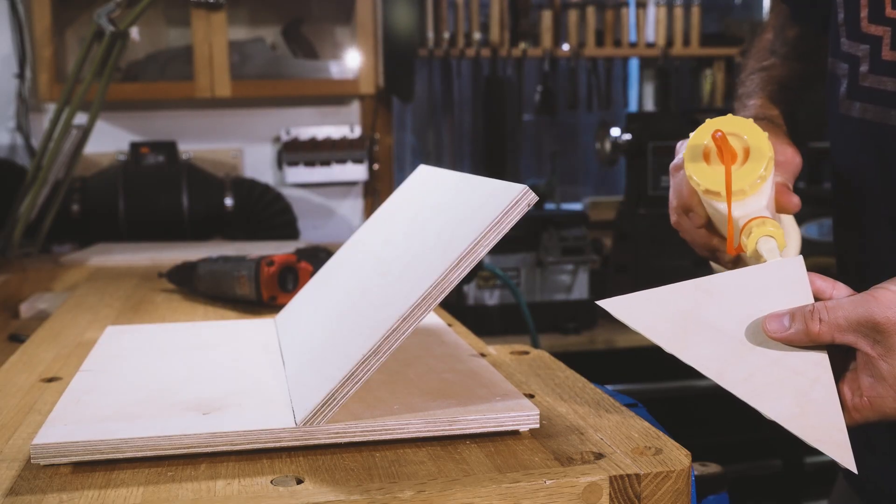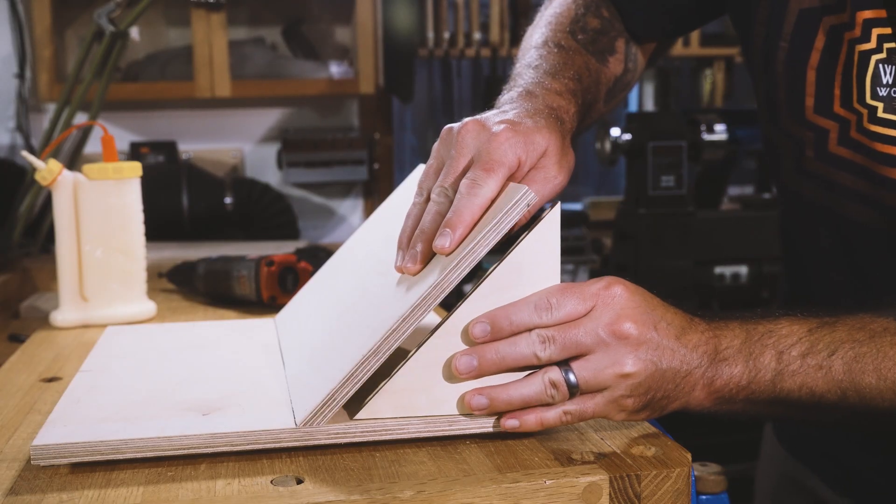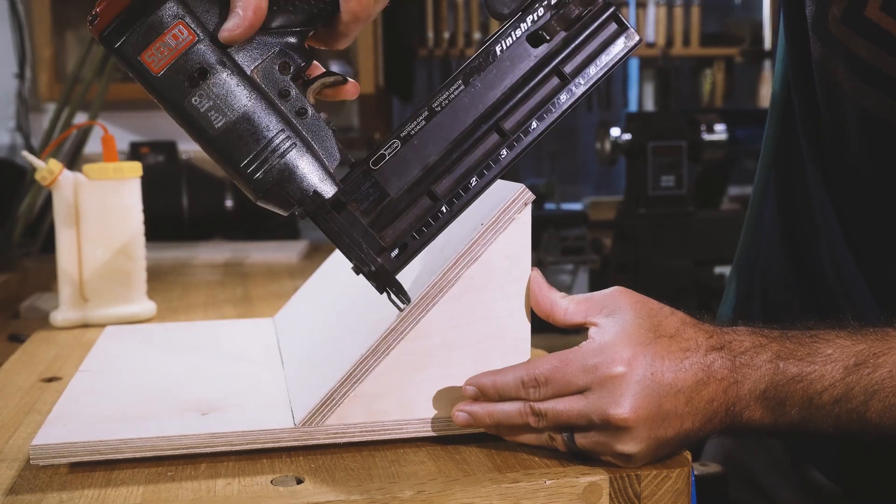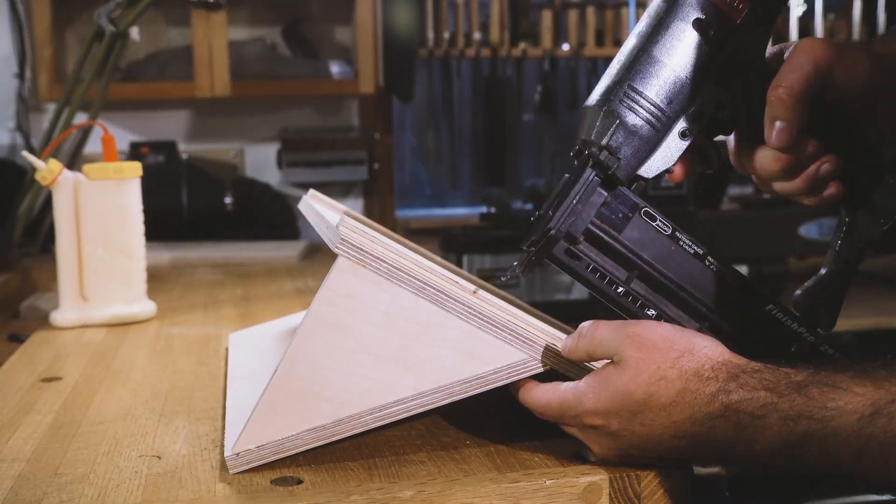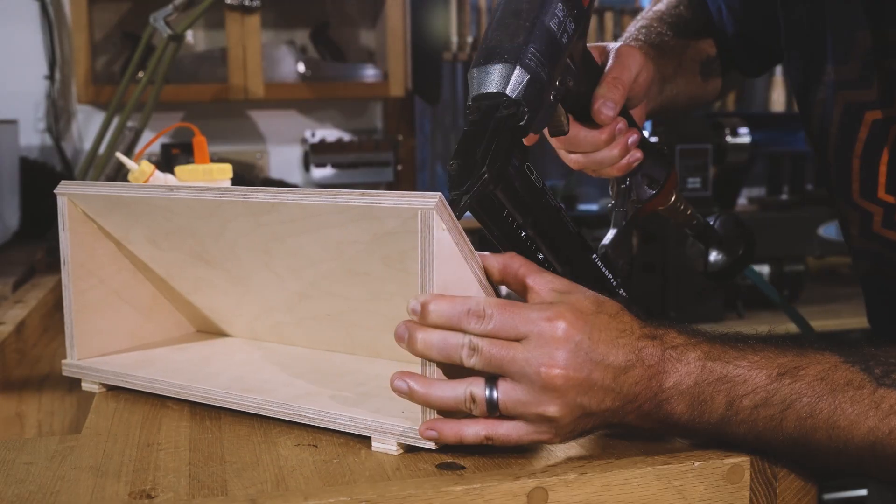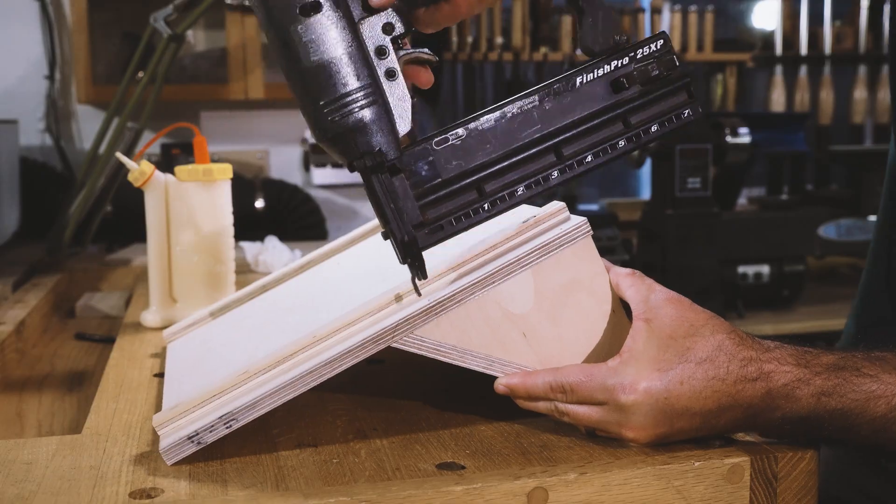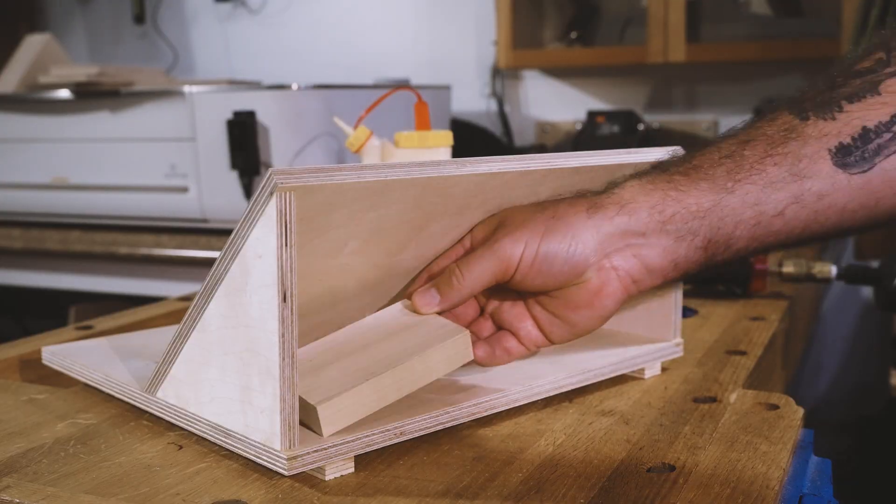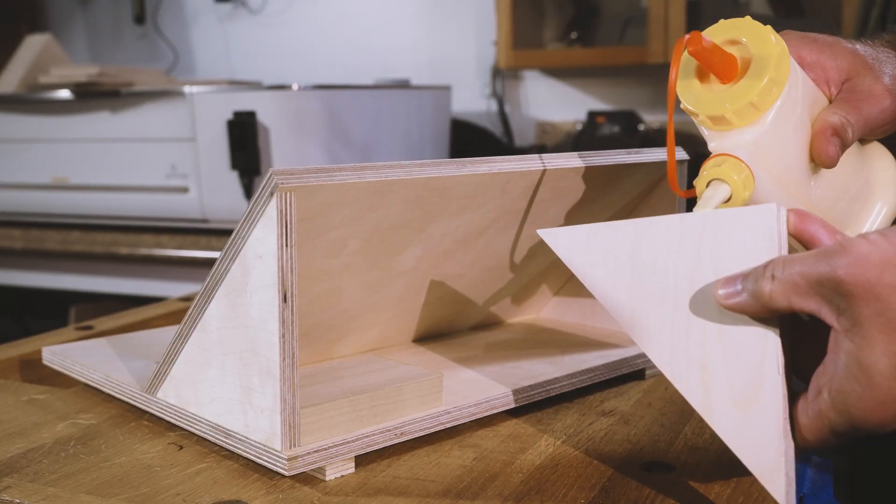Now we can start adding our triangle braces with glue and brad nails on each side. I'm using a scrap of wood to get consistent spacing on the middle two braces.